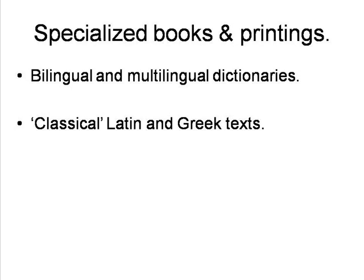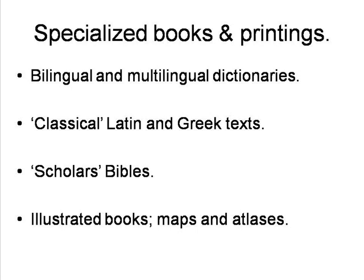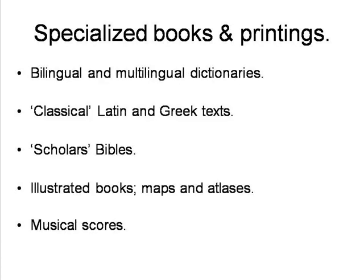One particular area of scholarship which was greatly enhanced by the spread of printing was the study of classical — that is, Latin and Greek — literature, history and philosophy, with printings of all the available major works becoming commonplace, often both in the original language and in various European vernaculars. Biblical scholarship was also enhanced by the appearance of printed Bibles, including polyglot editions with copious notes. Also of note were certain forms of specialized printings, including illustrated books with woodcuts — the earliest in 1471 — and maps and atlases. In 1501, music publishing was revolutionized with the appearance of the first printed musical score, which required a three-stage process: first staves, then notes, and then the text.